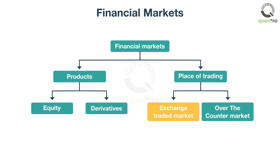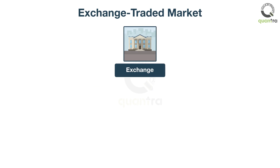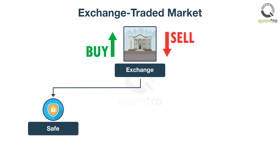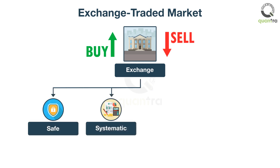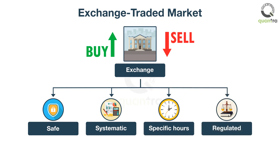Exchange-traded markets are the ones in which all transactions for buying and selling securities are routed through a central entity, usually an exchange. It is a market where trading takes place in a safe and systematic manner. It has a physical location, and trading in such a market happens only during specific hours. Such markets are regulated in nature.